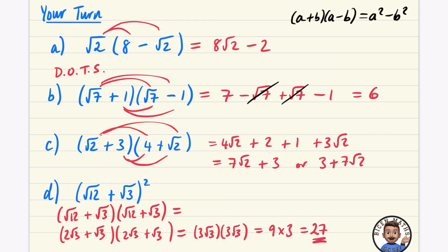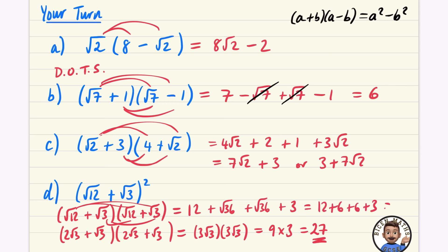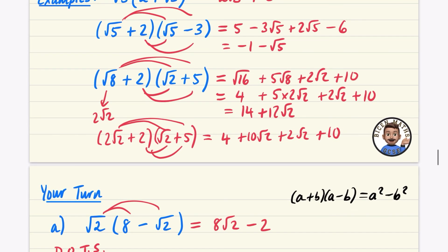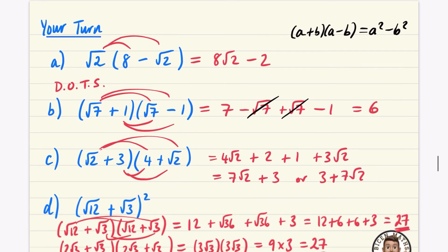Checking by expanding without simplifying first: root twelve times root twelve is twelve; root twelve times root three is root 36, which is six; root three times root twelve is another root 36, another six; and root three times root three is three. So twelve plus six plus six plus three is also 27 — the same answer. This is a good reason to simplify first; it tends to make things much easier, so always look out for whether you can simplify anything inside the brackets first.